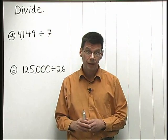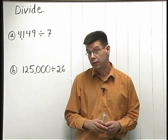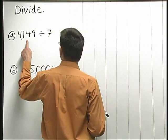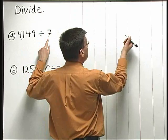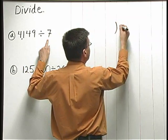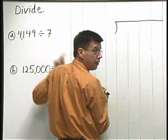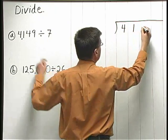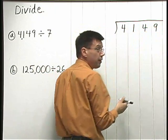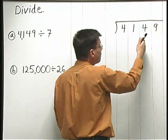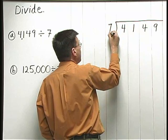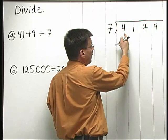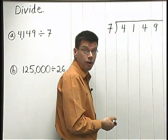Now let's go ahead and set up Problem A in the long division box. We're taking 4,149 and dividing by 7. So 4,149 goes inside the long division box. I'm going to write 4, 1, 4, 9 with each digit in a separate column. Out in front, I write the 7 that I'm dividing by. You don't need to write the comma inside the long division box if you don't want to.